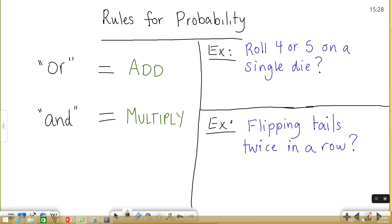So let's take a look at some other rules for probability, basic ones at least. If you're looking for the probability of doing this or that, you're going to add the probabilities together. If you're looking for the probability of doing this and that, you're going to multiply the probabilities together.